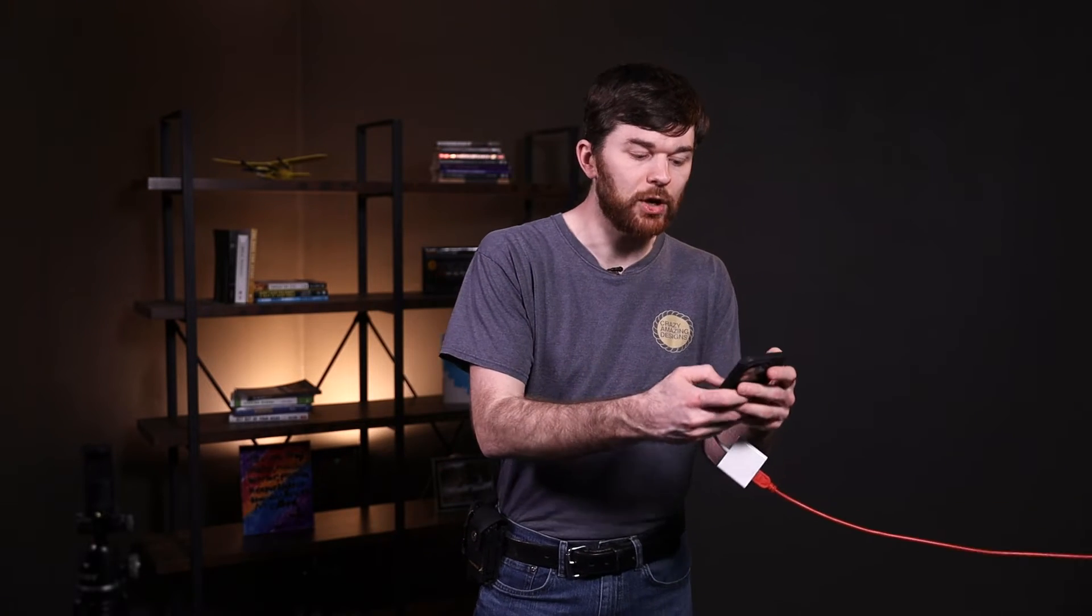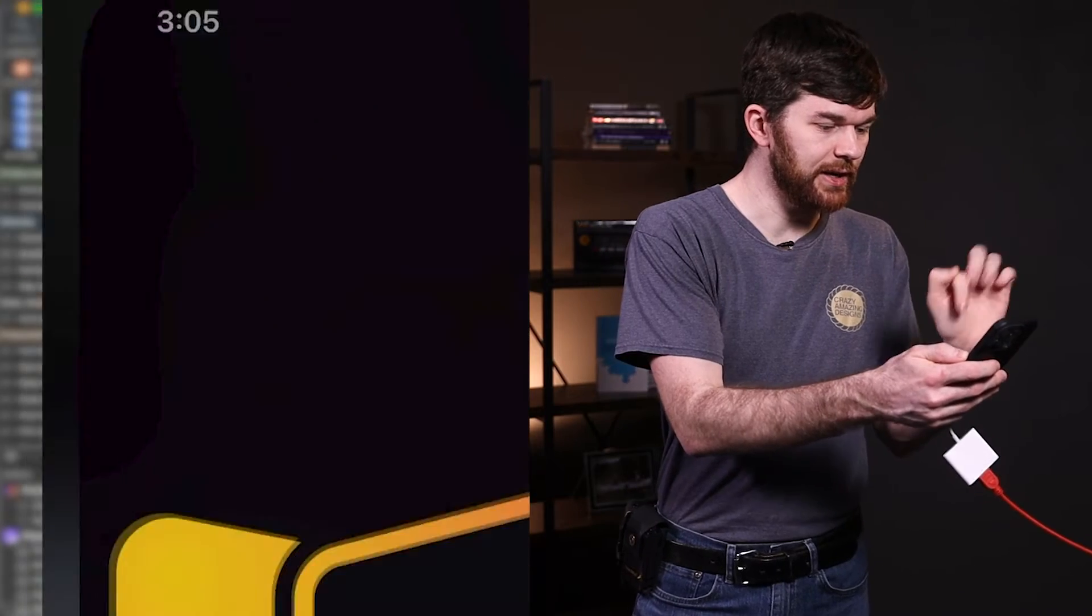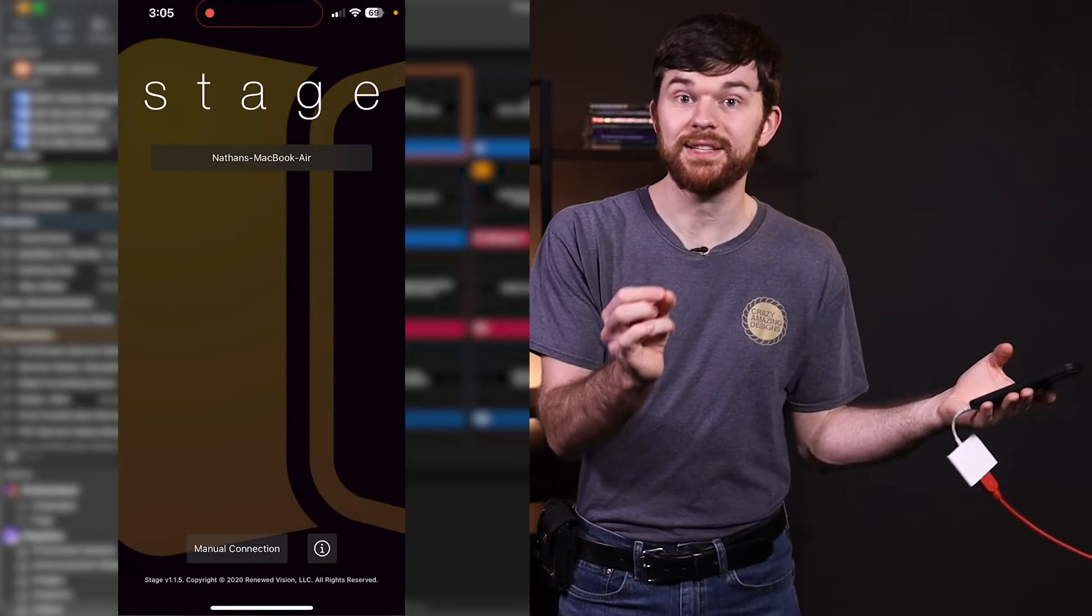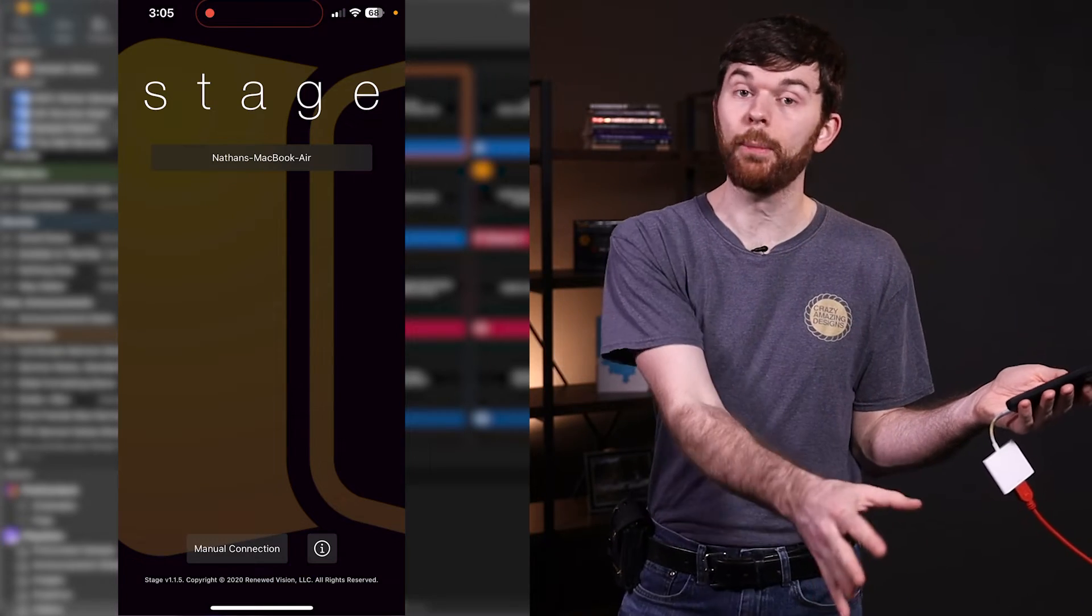So with your iPhone or an Android, there is an app called the stage app. So I can go ahead and click on it right here, the stage app. And now I'm going to be able to see my instance of the stage app from the ProPresenter running on my computer.